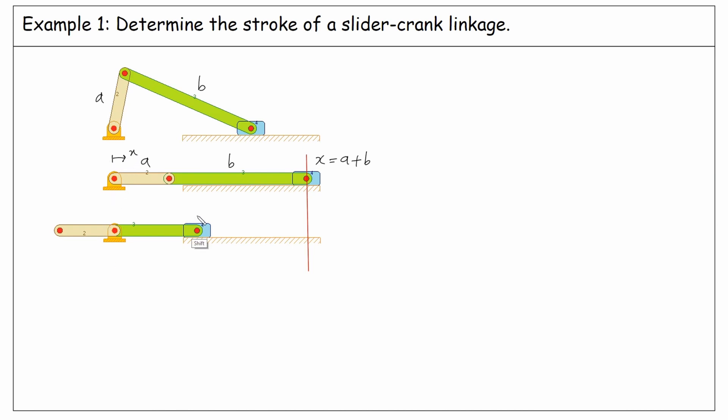And the other one is when we have them aligned in a different way like this. This time minus A and then for the coupler link plus B. So the position of the slider is minus A plus B. Now the distance between the two extreme positions is this position minus this one. So the stroke is A plus B minus minus A plus B becomes two times A.